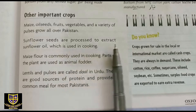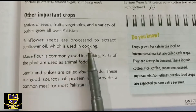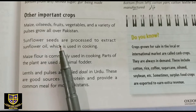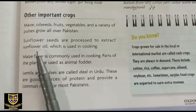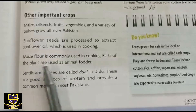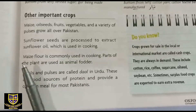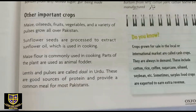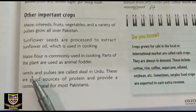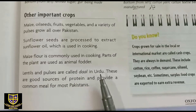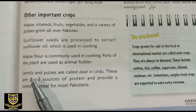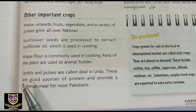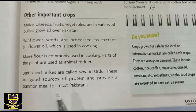All the vegetables are used in cooking. Sunflower seeds are processed to extract sunflower oil, which is used in cooking. Maize — مکئی — is also commonly used in cooking, and parts of the maize plant are used as animal food. Lentils and pulses are called dals in Urdu. These are also called lentils — they are a good source of soft protein and provide a common meal for most Pakistanis.